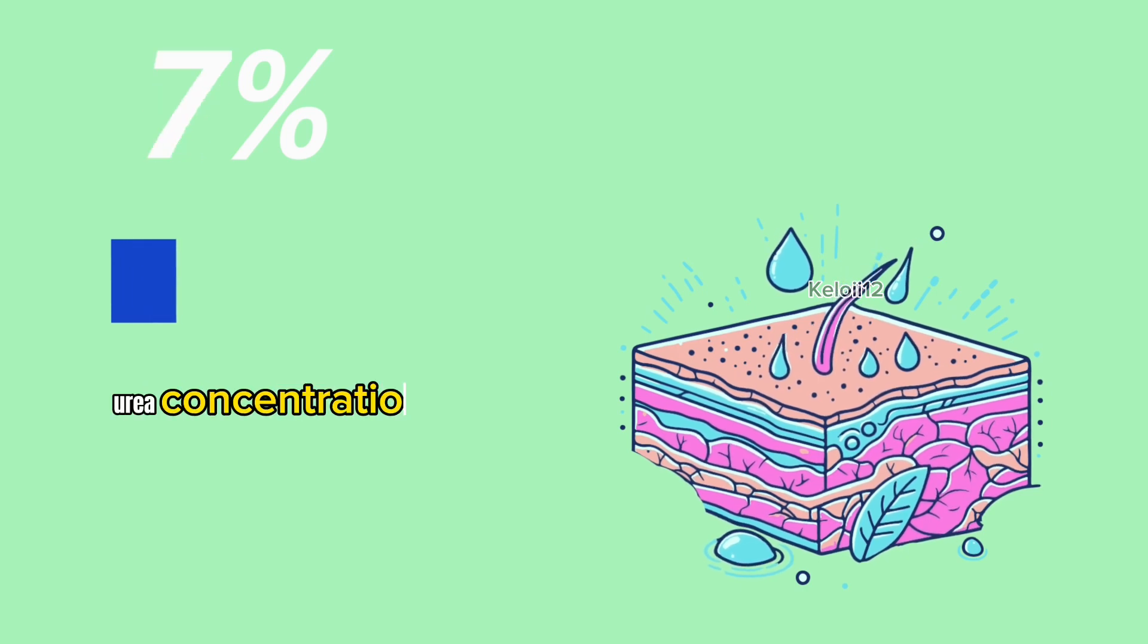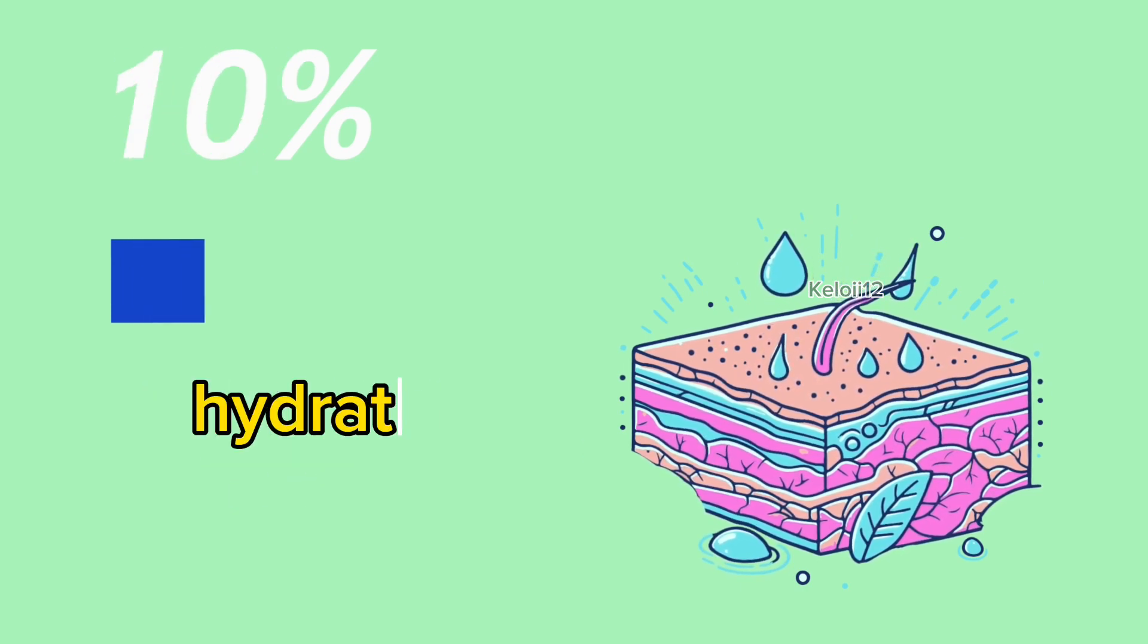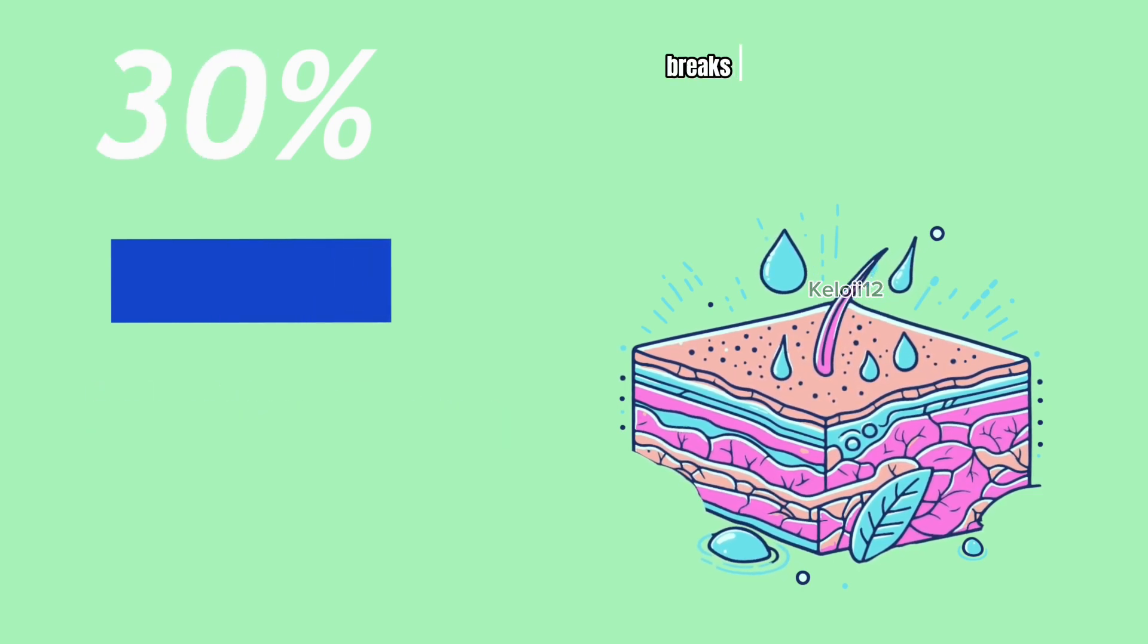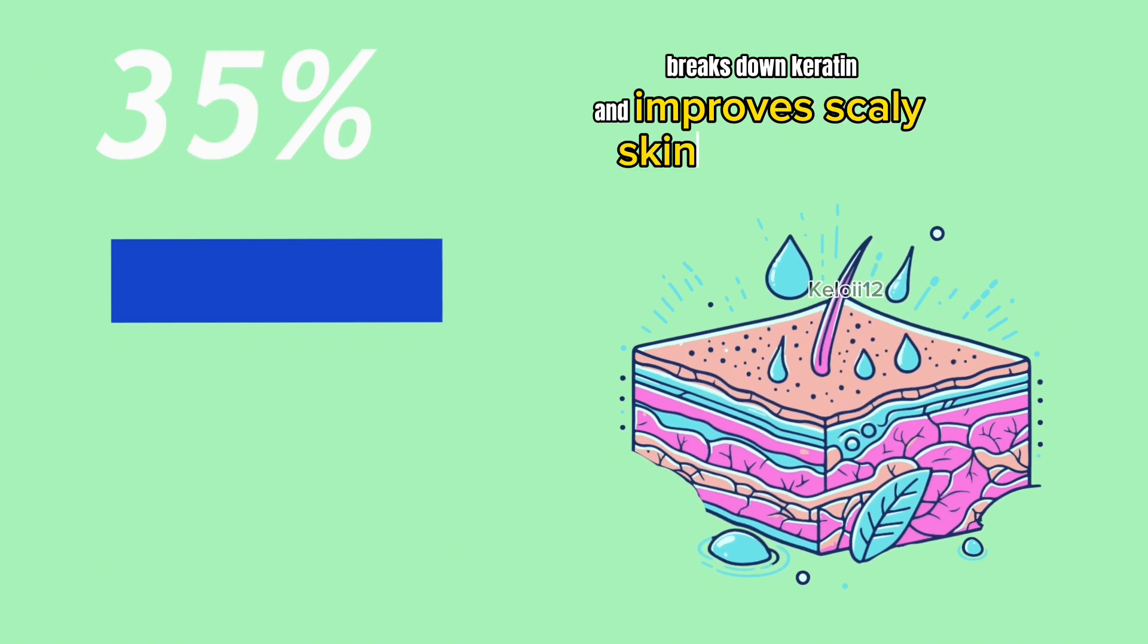Urea concentration varies between products. 10% can hydrate the skin. 20-30% can reduce itching, break down keratin, and improve scaly skin conditions.